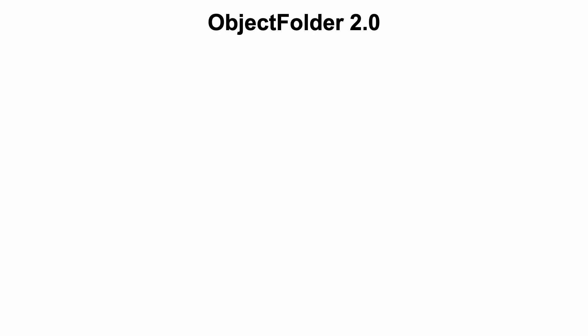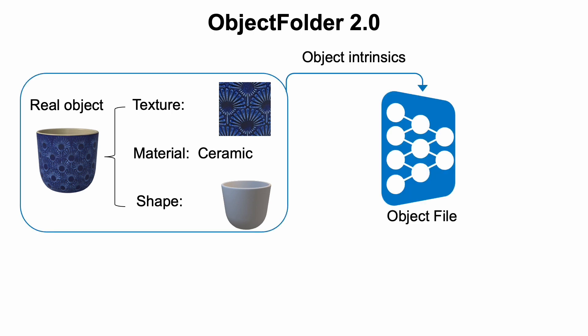In this work, we introduce the Object Folder 2.0 dataset, which contains 1,000 objects in the form of implicit neural representations. We virtualize each object by encoding its intrinsics, texture, material type, and 3D shape with an object file implicit neural representation.